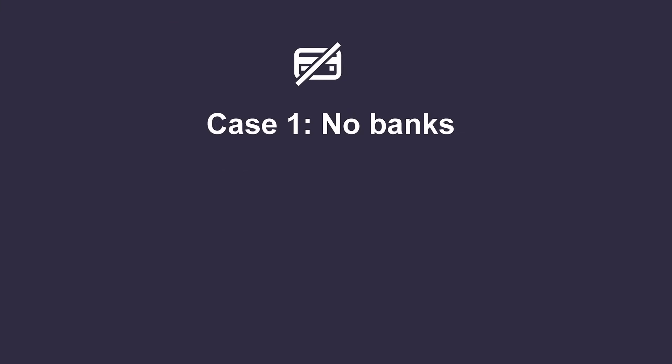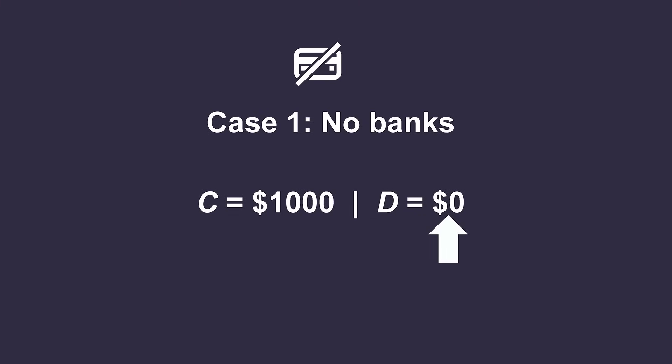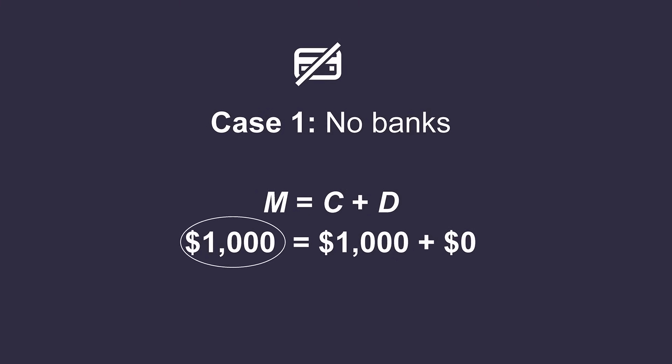In case one, when there are no banks at all and the central bank has printed $1,000 circulating as currency, we have currency equal to $1,000. No deposits since there are no banks. So total money supply is exactly the same as the initial amount of money the central bank printed: $1,000.